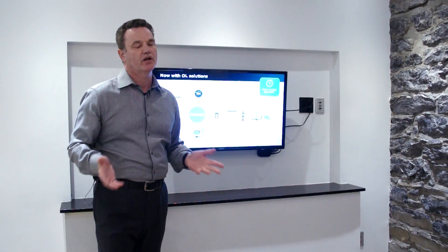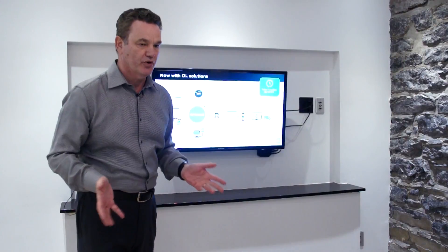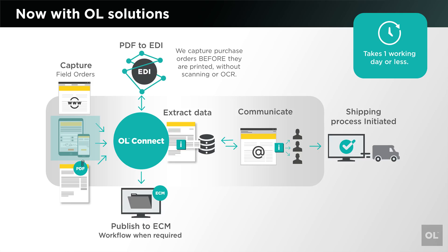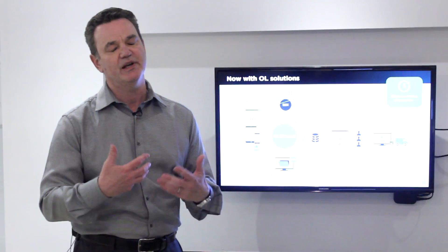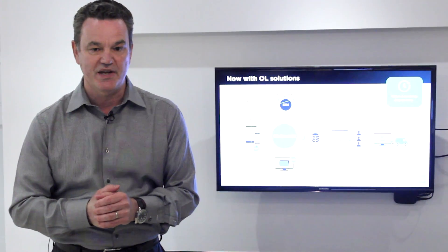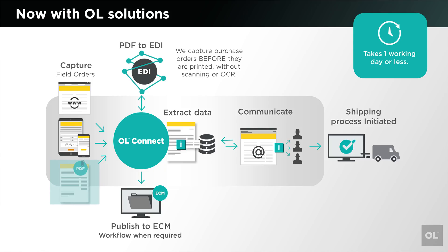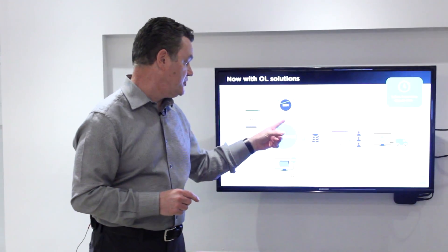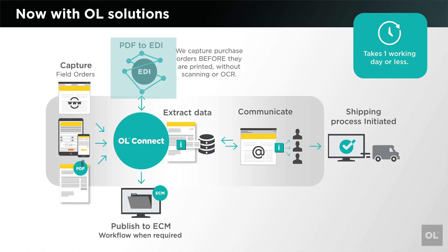So let's take a look at how OL Connect really helps with this order processing system. We have the three inputs already discussed, but there are two key points. Number one is tablet technology, which enables us to move paper-based forms for collecting orders to completely mobile, full web-based applications. In addition, we can now take an inbound PDF and extract all the data from it — including line item detail extraction — and push that data directly into your ERP system over an EDI network.